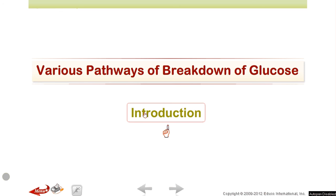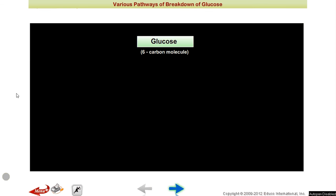Now we will discuss about the various pathways of breakdown of glucose which comes under respiration. Respiration is basically when the food is oxidized in the presence of oxygen and gives you energy. But breathing is that you take in air and exhale out carbon dioxide. How this is being converted into energy is basically the respiration part.